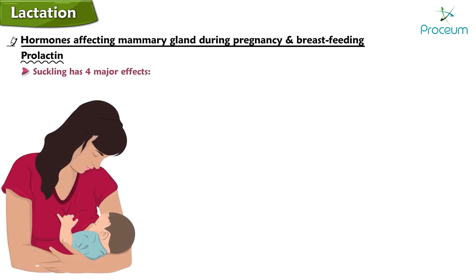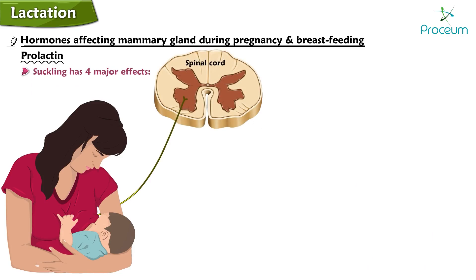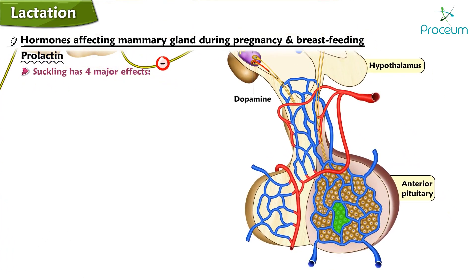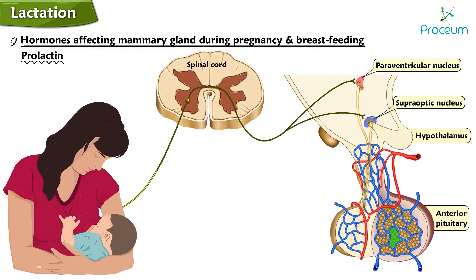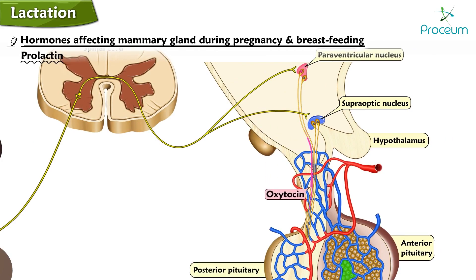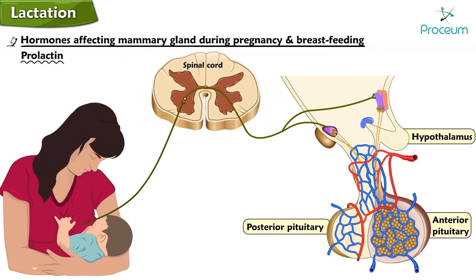Suckling has four major effects. First, it stimulates sensory nerves which carry the signal from the breast to the spinal cord. Second, in the arcuate nucleus of the hypothalamus, the afferent input from the nipple inhibits neurons that release dopamine, which normally travels via the hypothalamic portal system to the anterior pituitary where it inhibits prolactin release; thus, inhibition of dopamine release leads to increased prolactin release. Third, in the supraoptic and paraventricular nuclei of the hypothalamus, the afferent input from the nipple triggers production and release of oxytocin in the posterior pituitary.